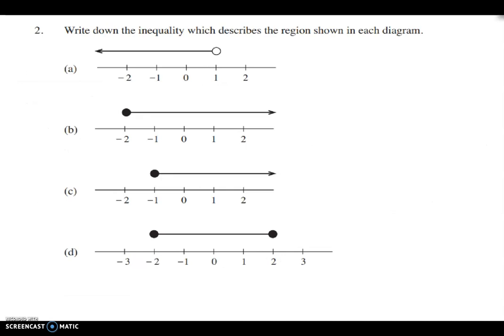Now let's look at question 2: write down the inequality which describes the region shown in each diagram. We have four number lines with arrows and circles. For part A, the arrow goes towards the left side, meaning the numbers are decreasing, so I write x is less than 1. The circle is on top of 1 and is not shaded, so I do not put an equal sign.